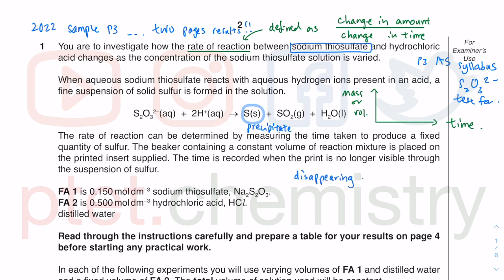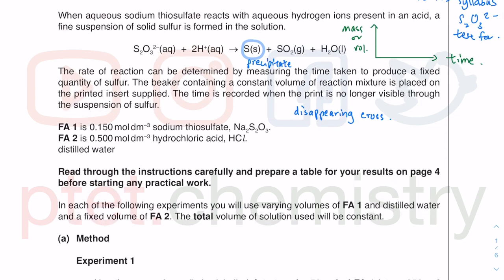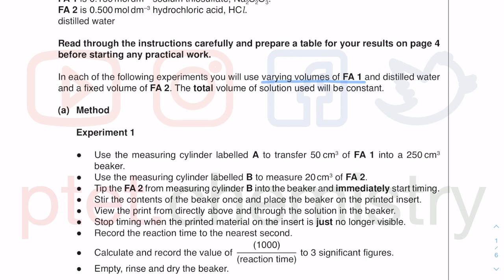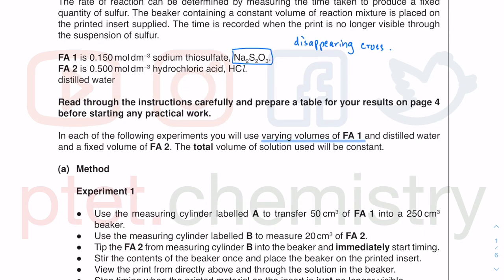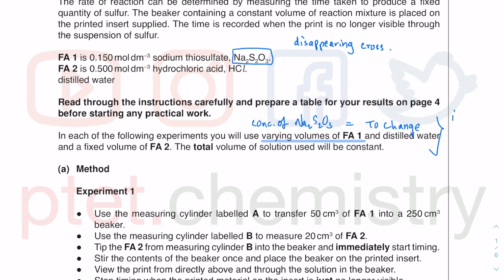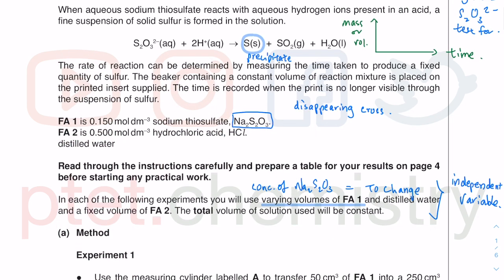In a real exam, Cambridge will give you a piece of paper with some letters written underneath, and the words will disappear due to the suspension of sulfur precipitating out. You are given a particular concentration of solutions. As usual, read through the instructions — you will use varying volumes of FA1, which is your sodium thiosulfate. So what you're changing is the concentration of Na₂S₂O₃. This is called your independent variable — what you change in the experiment. And what are you measuring? You are measuring the time taken for the sulfur precipitate to form — the time taken for the print or cross to disappear completely.